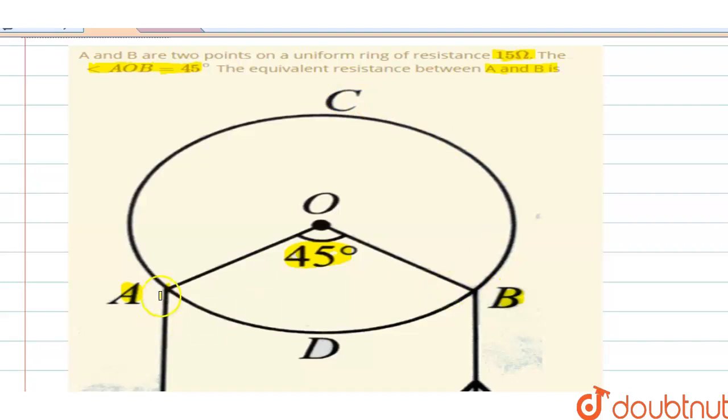Now to find the resistance between A and B, you need to know the resistance between ACB and the resistance between ADB, so you can find the equivalent resistance. To find these, you have a partition here with an angle of 45 degrees.